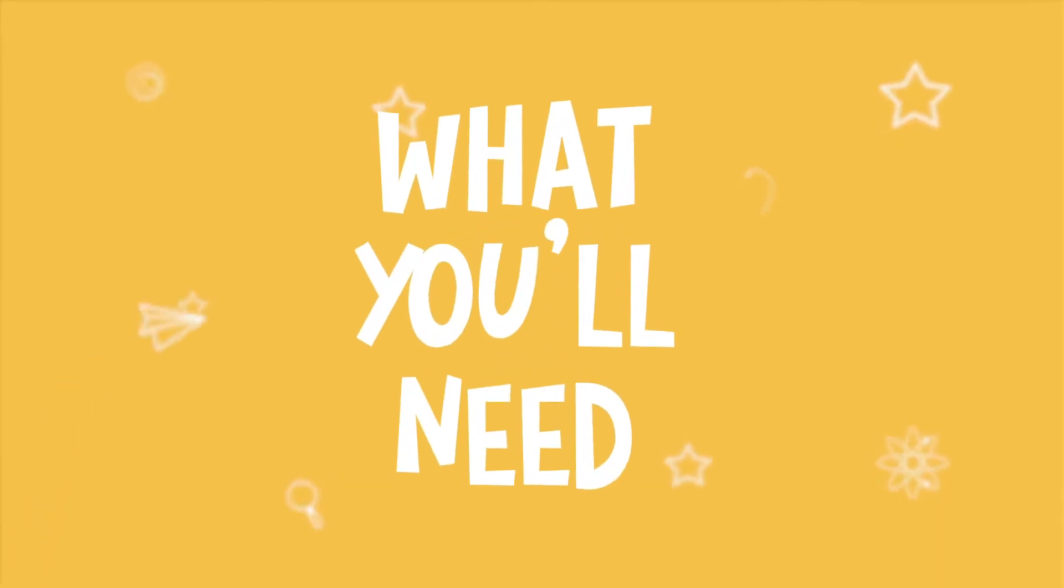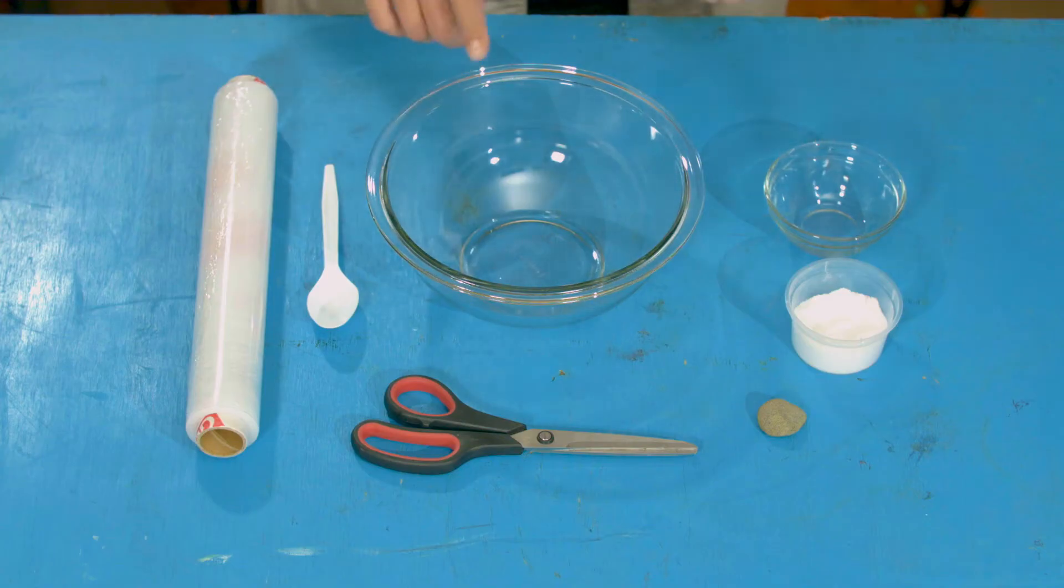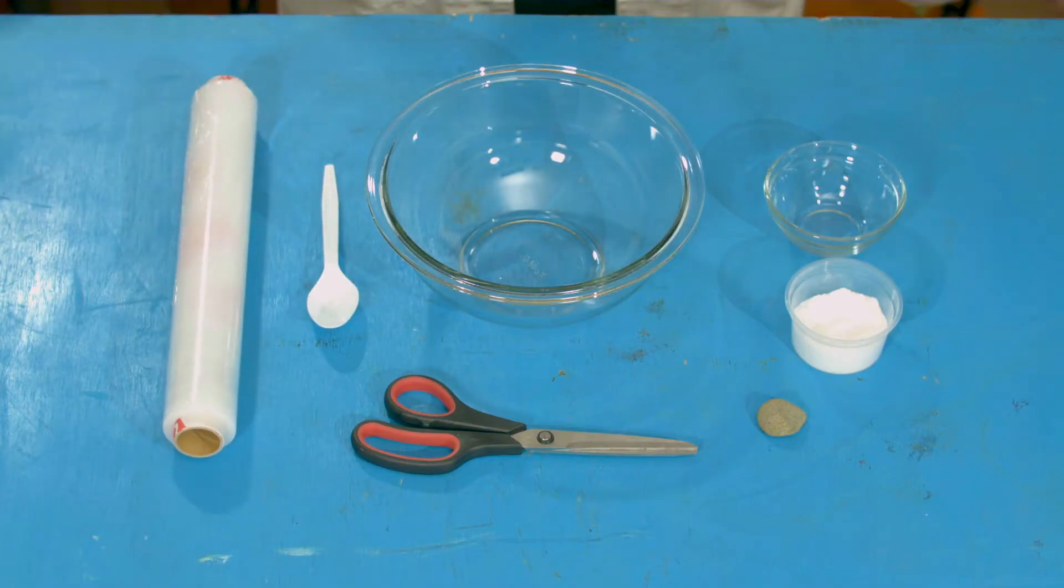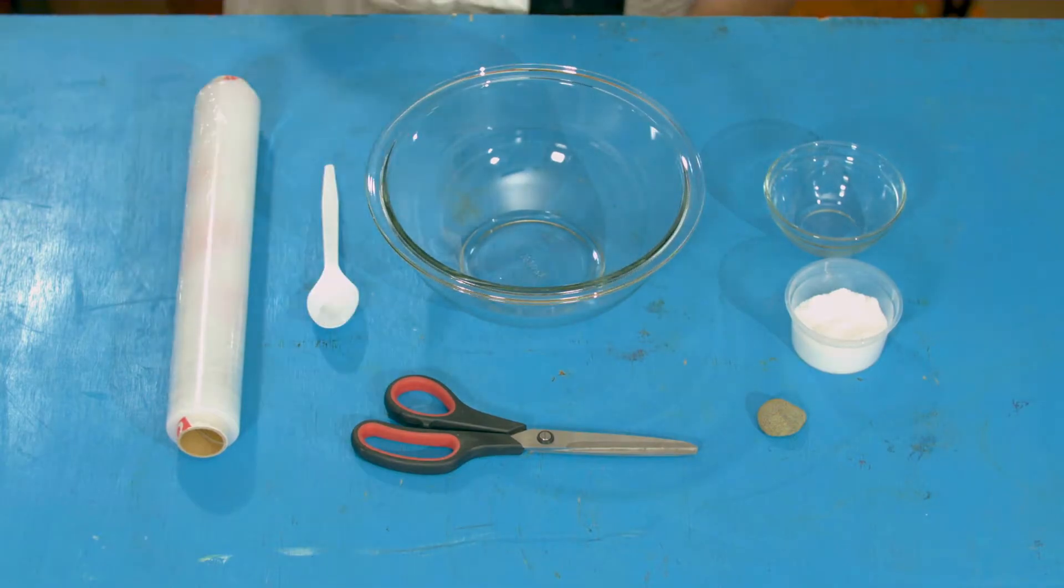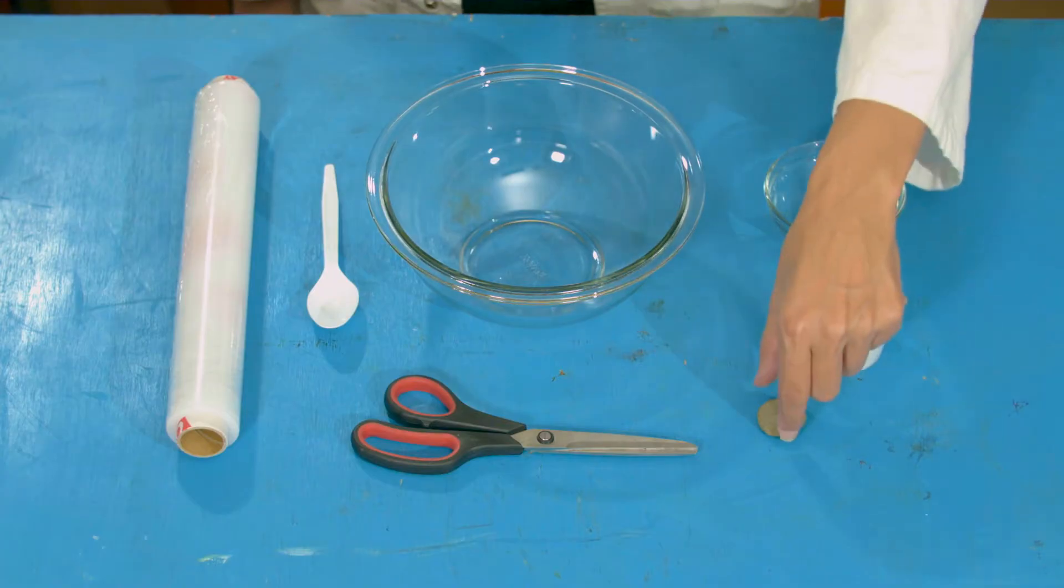You are going to need two bowls, one of them much larger and deeper than the other one, some food wrap or some soft plastic packaging that's been left over needs to be big enough to cover the biggest bowl, scissors, a spoon, something heavy like a little rock or pebble or a bit of blue tack, some salt and some hot water.